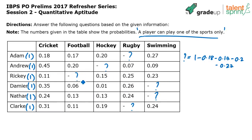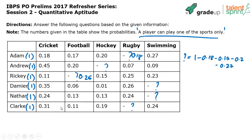For Adam: 18 + 17 = 35, plus 20 = 55, plus 27 = 82, so 1 minus 0.82 = 0.18 for rugby. For Ricky: 11 + 15 = 26, plus 25 = 51, plus 23 = 74, so 1 minus 0.74 = 0.26. The missing probabilities are found by taking the difference from one.